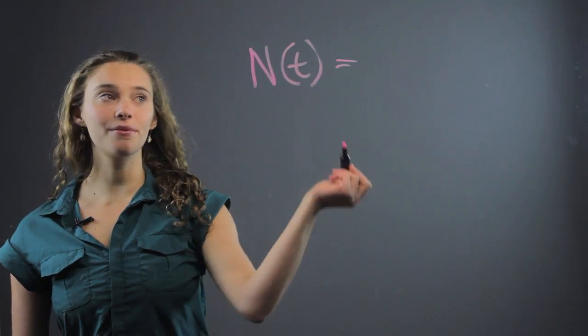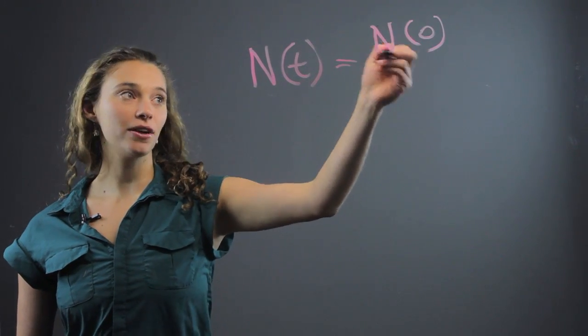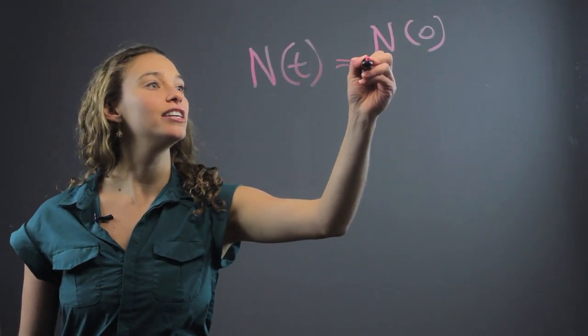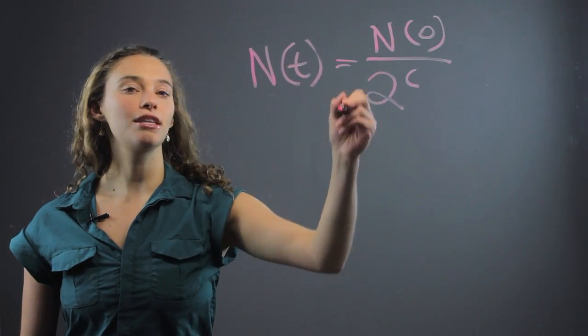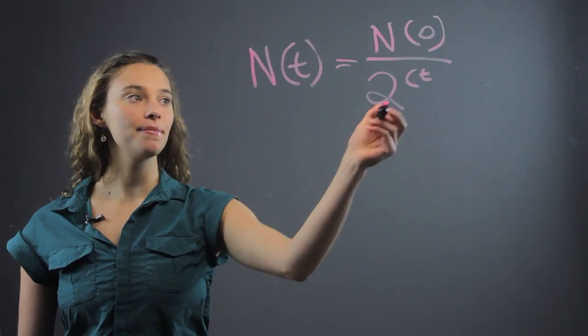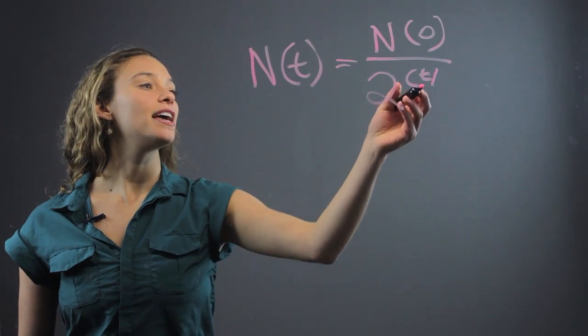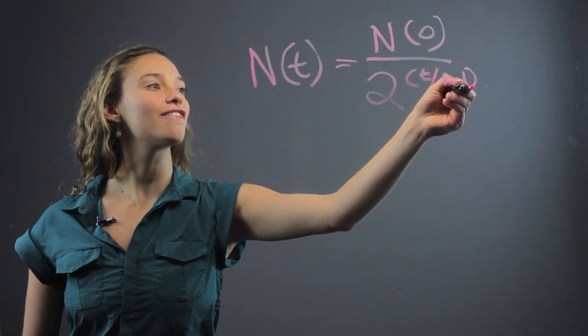We're going to set that equal to the original amount of the substance that you start with, divided by 2 to the power of t, where t is time that it takes, and divided by the half-life. I'll write HL for half-life.